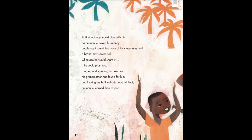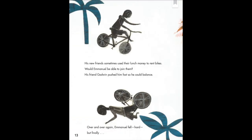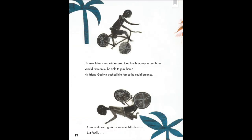At first, nobody would play with him. So he saved his money and bought something his classmates did not have — a brand new soccer ball. Of course, he would share it if he could play too, lunging and spinning on crutches his grandmother had found for him and kicking the ball with his good left foot. Emanuel earned their respect. His new friends sometimes used their lunch money to rent bikes. His friend Godwin pushed him fast so he could balance. Over and over again, he fell hard. But finally, he rode.